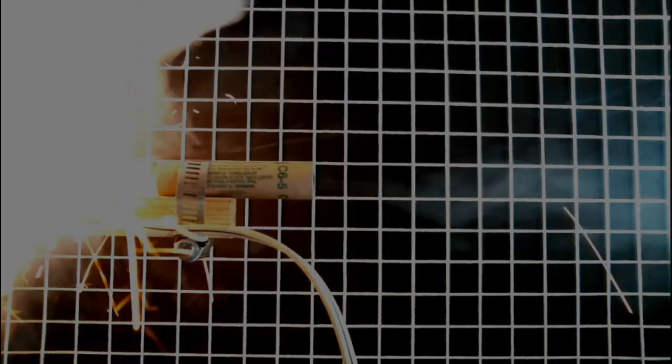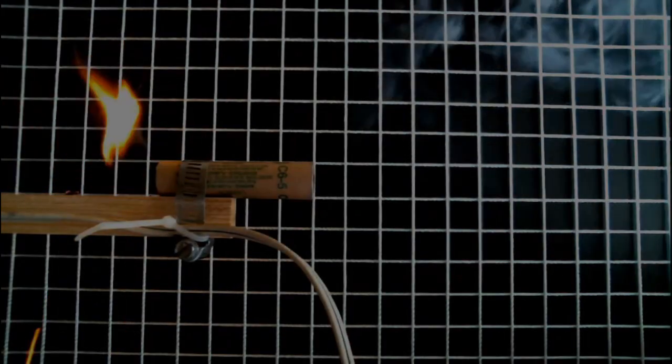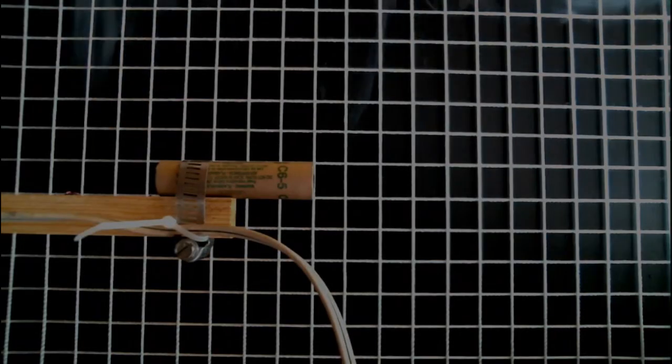Now we see the ejection charge. You notice a lot of flames coming out the end of the motor. That's why we use recovery wadding to protect the parachute during deployment. Well, that's it for this episode. I hope you learned a little bit more about how rocket motors work and how rocket motors produce thrust. So hope to see you next time at the lab.